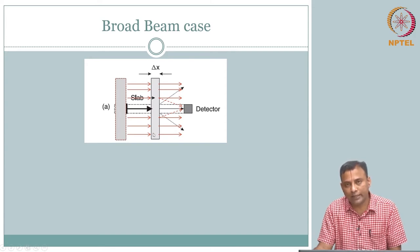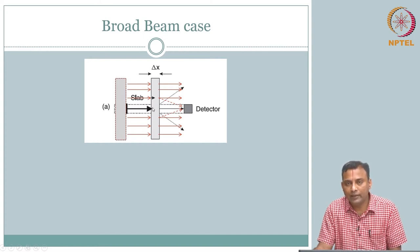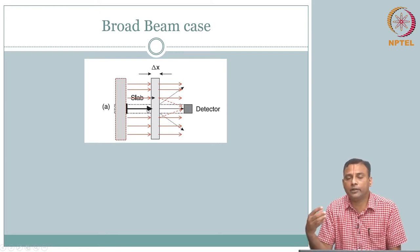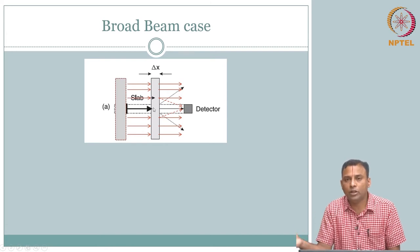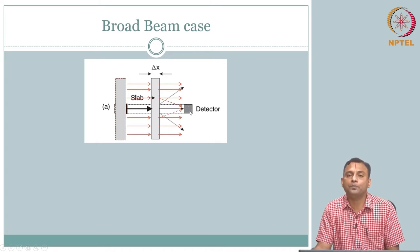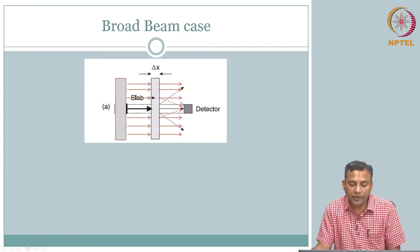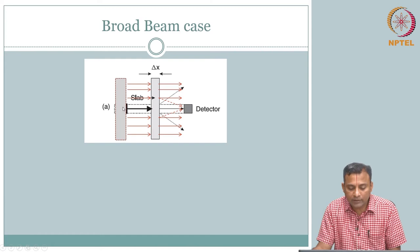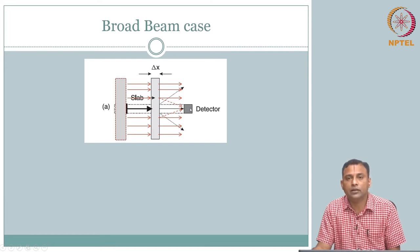In the narrow beam case, we used it to define attenuation: send through a slab of delta x, and what comes out at the detector has fewer photons than what went in. That loss characterizes the attenuation of the material, and we came up with a model. In the broad beam case, because the source is larger than the detector size — that is what makes it broad beam — when you send it through the same slab of delta x, what do you detect now?